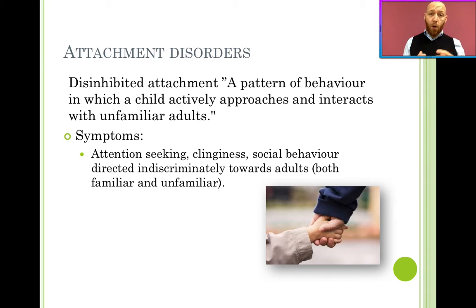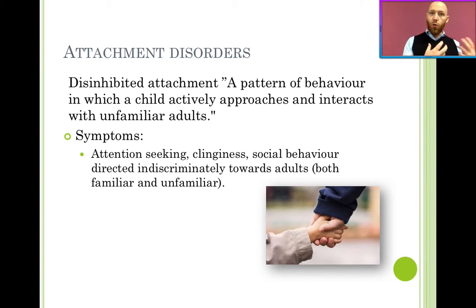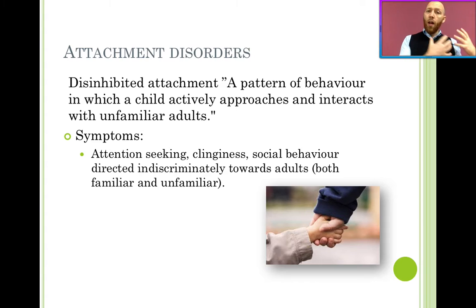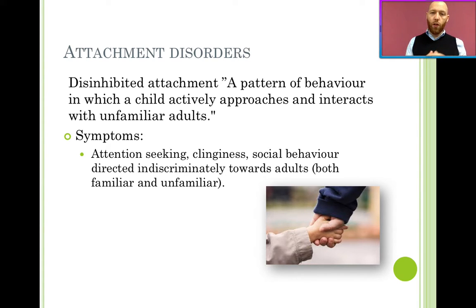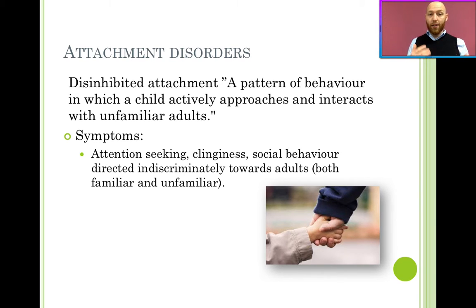Disinhibited attachment is characterized by a pattern of behavior in which the child actively approaches and interacts with unfamiliar adults. As you know from the strange situation, the normal behavior to strangers is to exhibit stranger anxiety, to avoid them, and to get distressed if your mother leaves you alone with them. In these children's cases, they have no or very little stranger anxiety and will immediately beeline for these adults. The symptoms are attention-seeking, clinginess, and social behavior directed indiscriminately towards adults.